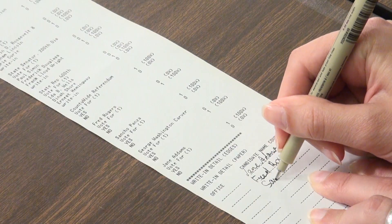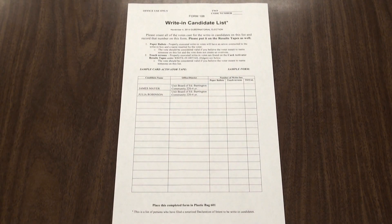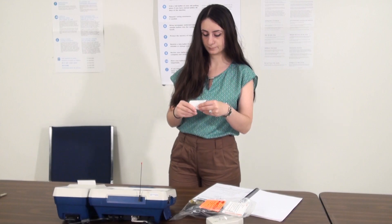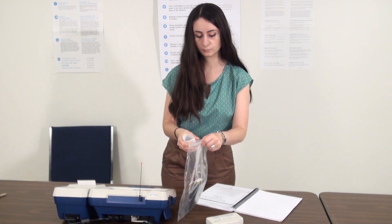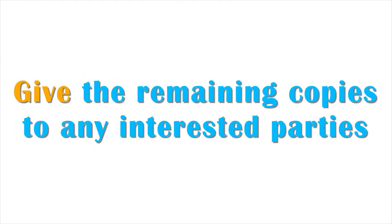Process the write-in votes and record them on each results tape and on the write-in candidate list form 106. Place the CTR tape and two copies of the results tape in plastic bag 601. The remaining copies may be given to the poll watchers or other interested parties.